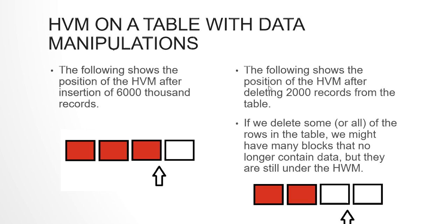As the left-hand side diagram shows, after inserting about 6,000 records in the table, the HWM has moved three blocks — just to estimate, after inserting 6,000 records, the HWM has increased by three blocks. Now when you do any DML statements, say you delete 2,000 records from the table, as shown on the right-hand side diagram, the HWM still points to the third block. It doesn't come back to the second block even after deleting some data.